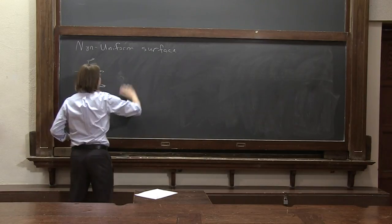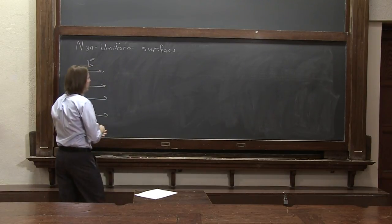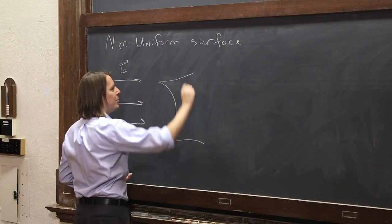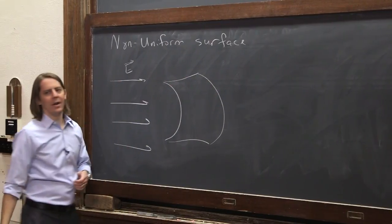So let's erase our nice, convenient, pretty little uniform surface and imagine we have some curved thing, some complicated curved object like that.